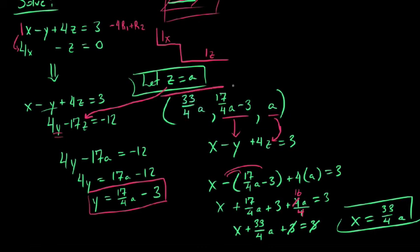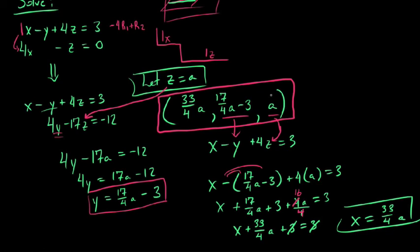And so this would be our set of infinitely many solutions. If you ever have fewer equations than you do variables, try to put it in row echelon form if you can. After doing so, allow z to equal a, then back-solve to get the other two variables. That's all.